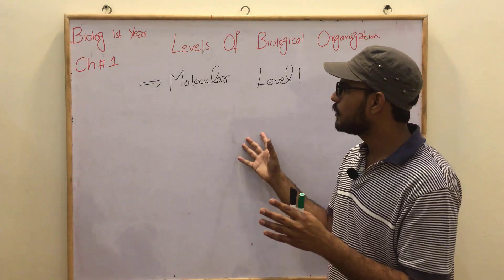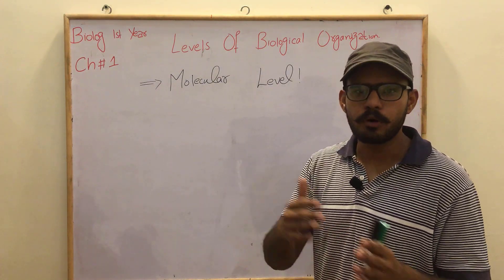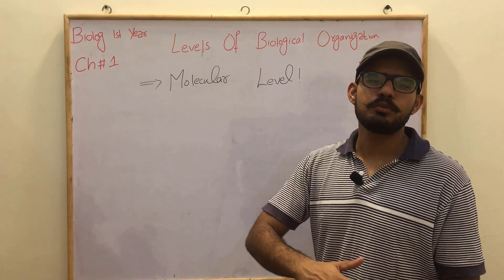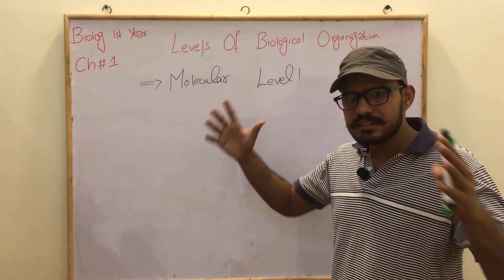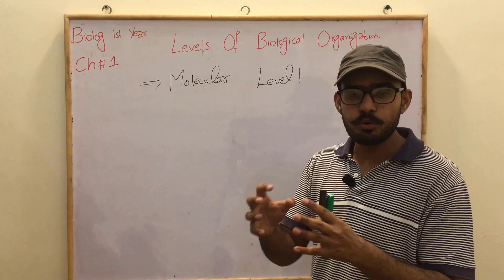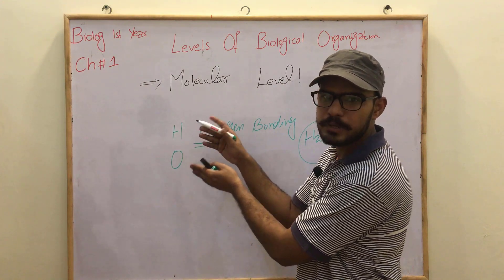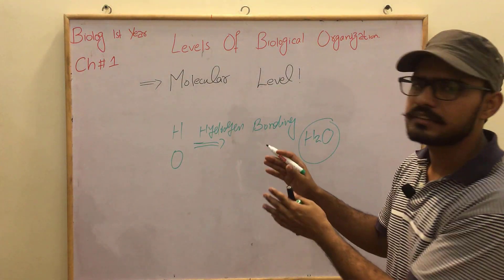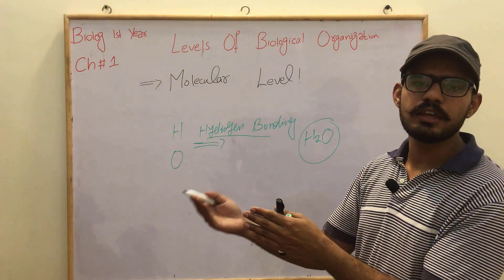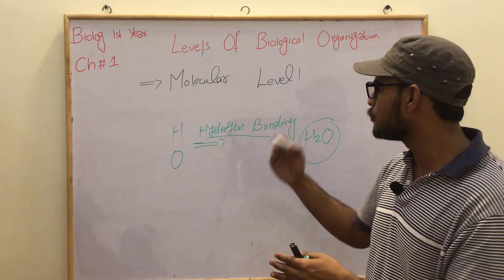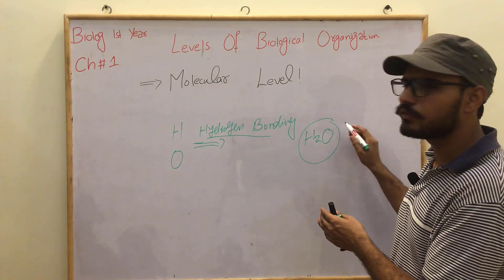The next step is the molecular level. When different elements are combined with different processes, there are different kinds of bonding — for example, ionic bonding, covalent bonding, and hydrogen bonding. As a result, when we get the final product, the final compound, we get molecules. When these two reactions are combined, the end result comes into the form of a molecule.